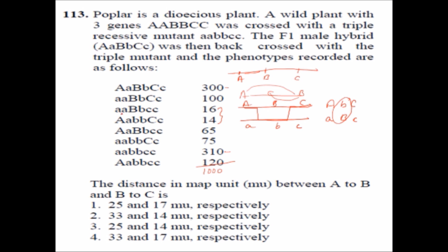Looking at the double crossover data — small a, small c — only the middle gene b is recombined. Here we have capital B in one class and small b in the double crossover class. From this data we can confirm that the gene sequence is a-b-c, meaning b is in the middle between a and c. Now we can move to calculating the genetic map distances.